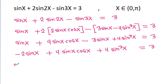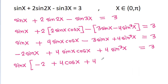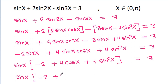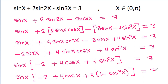And we can take sin x common, and we will get minus 2 plus 4 cos x minus 4 sin square x is equal to 3. And it is sin x times minus 2 plus 4 cos x plus 4, and sin square x is 1 minus cos square x, that is equal to 3.